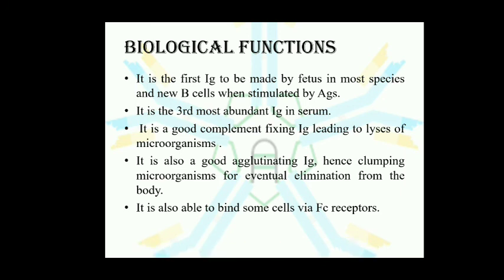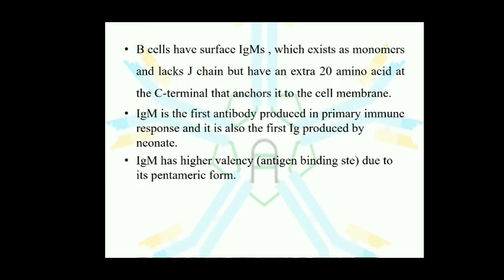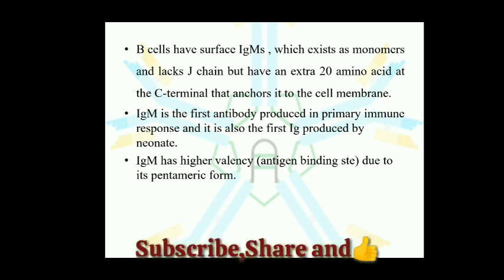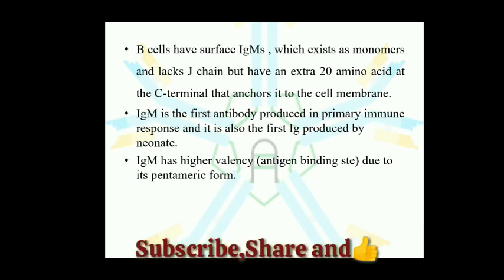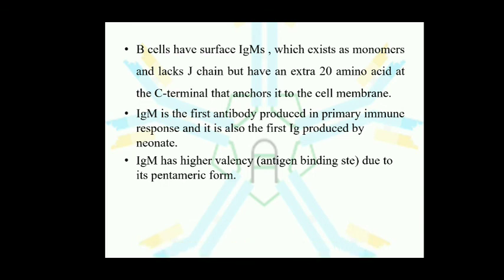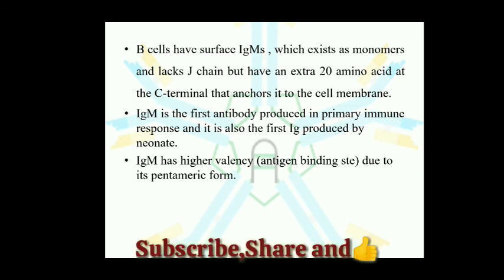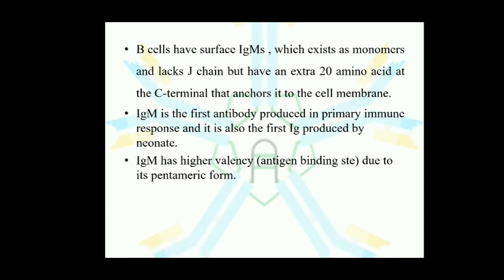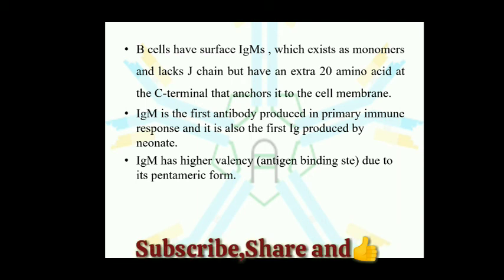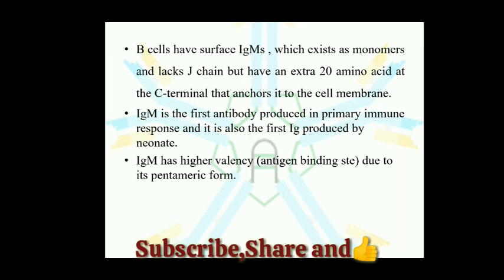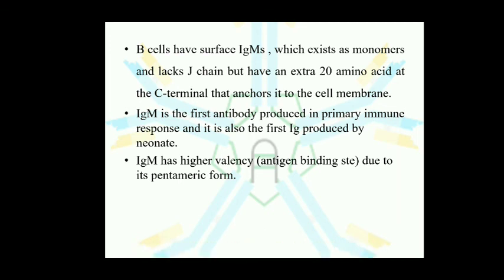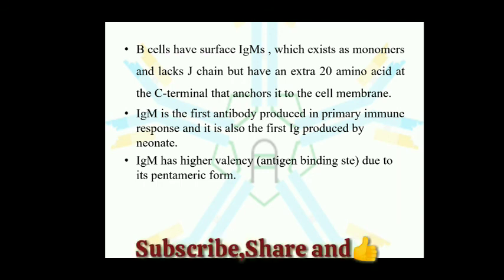IgM is also able to bind some cells via their Fc receptors. Surface IgM on B cells exists as monomers, and because it is in monomeric form, it lacks the J-chain. Instead, there is an extra 20 amino acids at the C-terminal region within the constant region that anchors it to the cell membrane. This extra 20 amino acids is required for expression as a membrane receptor.